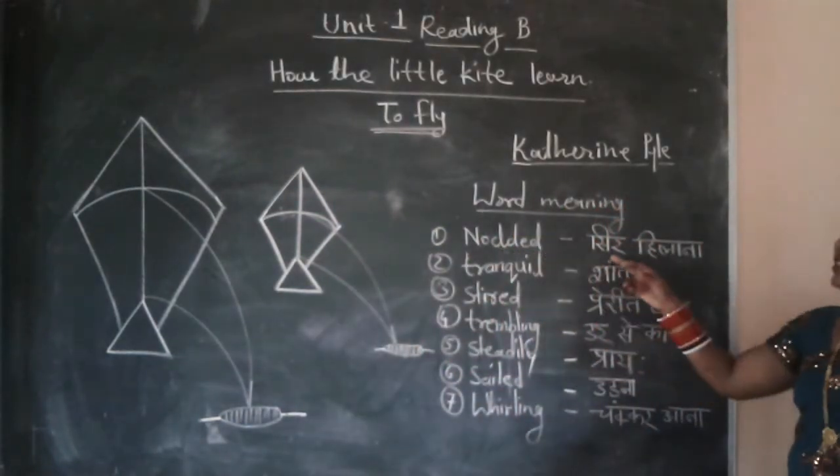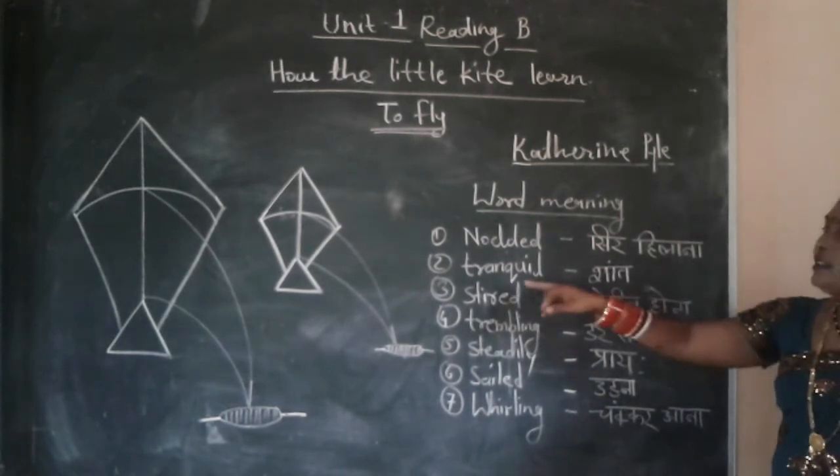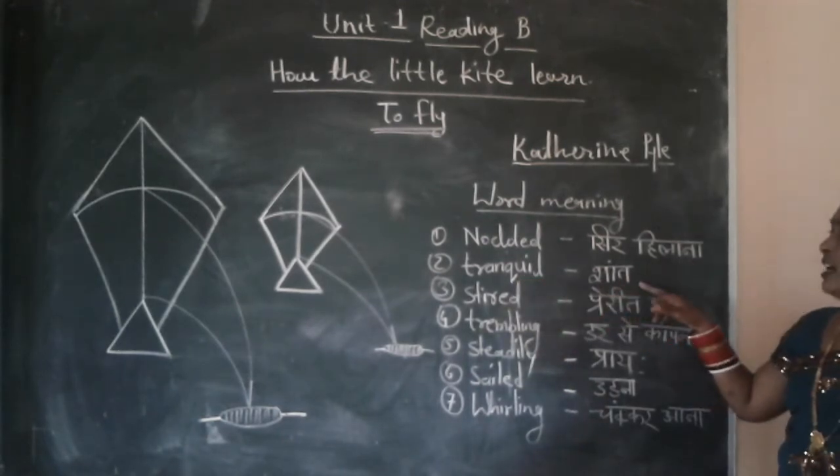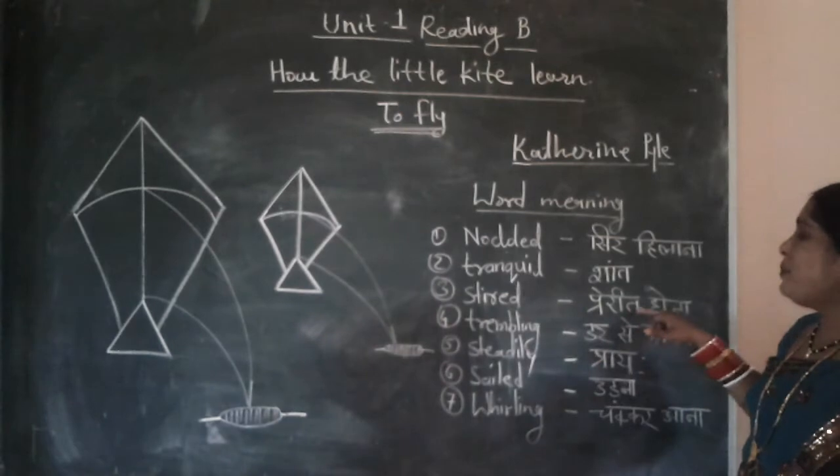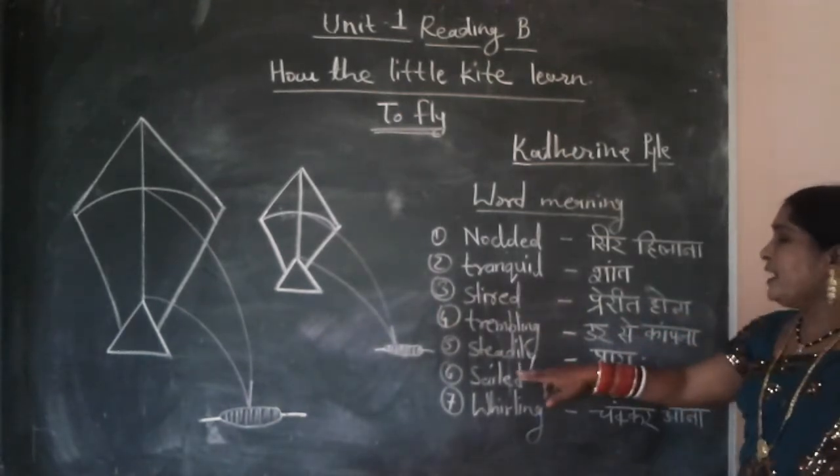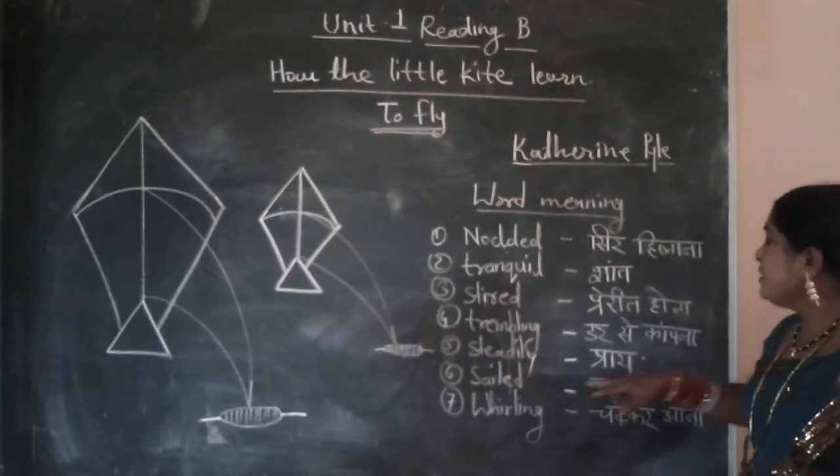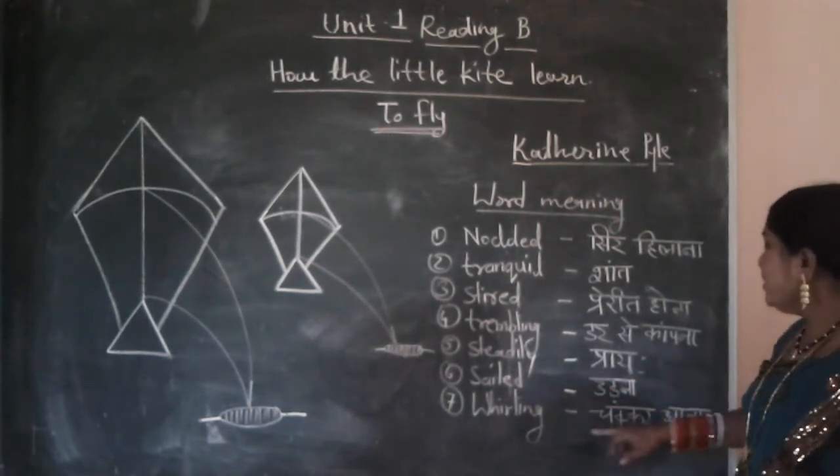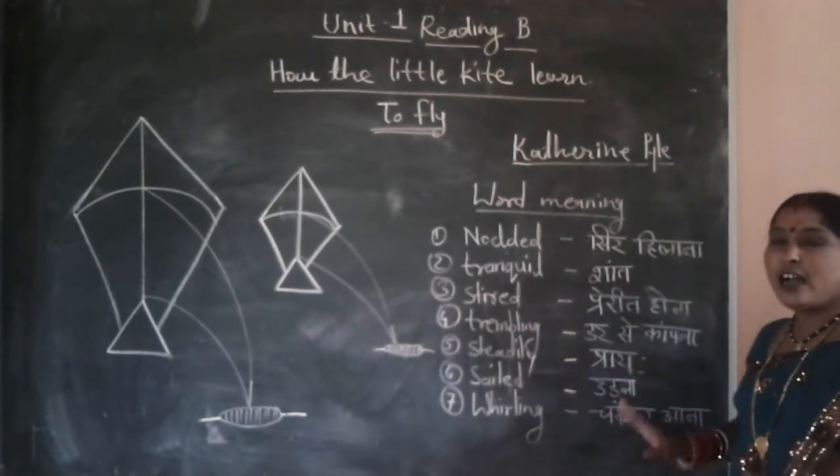Let us see the word meaning. Nodding, sehilana. Frankly means suddenly. Soared, udharna. Trembling, darasiwa kana. Steadily, dheere. Steadily, udhna. Fairly, chakkarana.